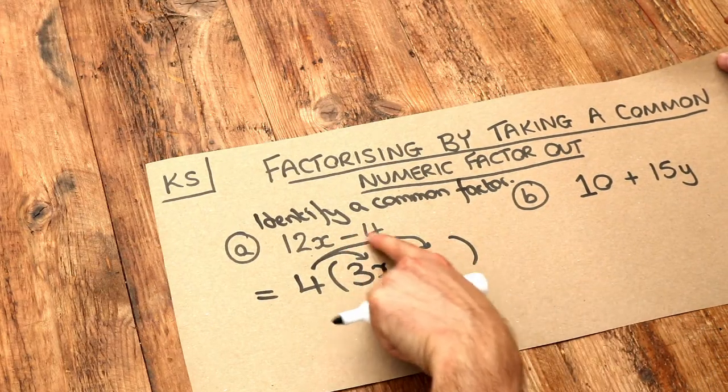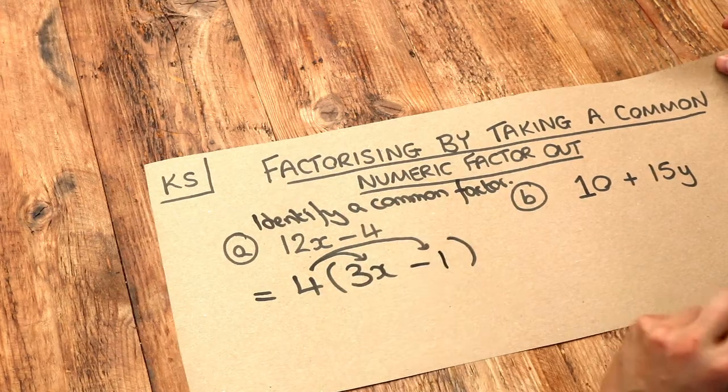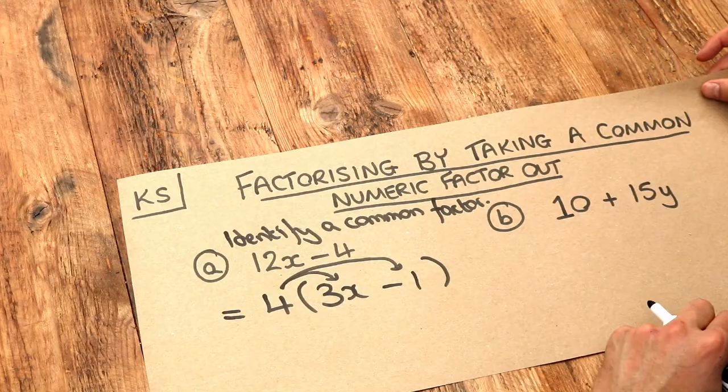And then what about this second term? 4 times what would give you minus 4? Well, 4 times minus 1 would give you minus 4. And that is the final factorisation.